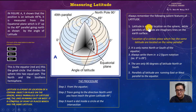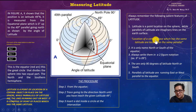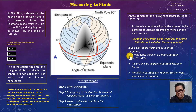Always remember: latitude is a point location on the sphere, while parallels of latitude are imaginary lines on the Earth's surface. Places with the same latitude are located on the same parallel. It is only named north or south of the equator. Always write latitude in two-figure notation. There are only 90 degrees of latitude north or south. Parallels of latitude run east or west.